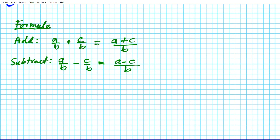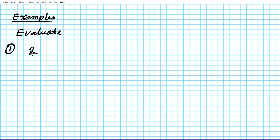So that's basically how you add and subtract fractions with like denominators. Now let's take a look at some examples. The instructions are to evaluate the given fractions. Question one: let's say we have two over three plus five over three.